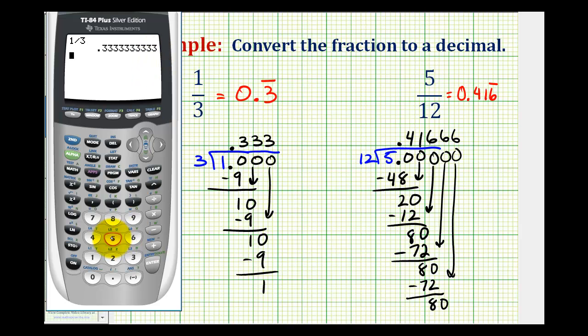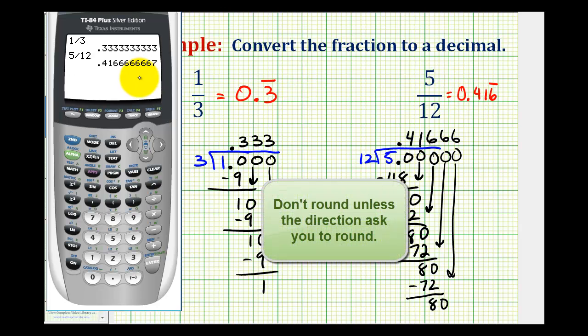And then we have five divided by twelve. And notice in this example, this last digit here is a seven. The calculator is actually rounding this decimal, which means it's not exactly equal to five-twelfths. But the way that we did it, it is. So you don't want to round your decimals when converting fractions to decimals.